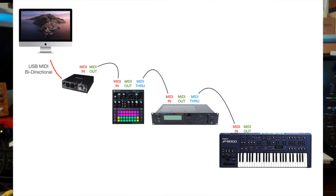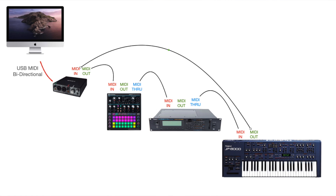Say you have three synthesizers and a sequencer controlling all three. In the classic cascade, you send from the sequencer to the first synth Input, Through to the second synth Input, Through to the third synth Input. When you play the sequencer it controls all three. But if you want to send notes back into the computer from the first synth, you need to connect its Output into the computer — so you'd have Out into In, Through into In, Through into In.